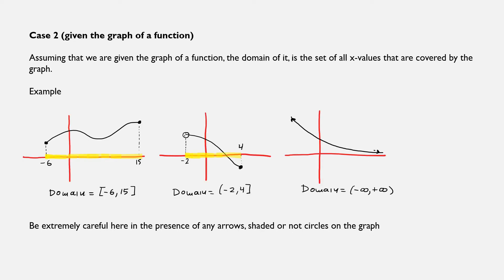Case number two: given the graph of a function. The domain is the set of all x values that are covered by the graph. In the left graph, the domain is [-6, 15]. In the middle graph, the domain is (-2, 4]. In the right graph, the domain is from minus infinity to plus infinity. All we have to do here is be extremely careful in the presence of any arrows or shaded/unshaded circles on the graph.